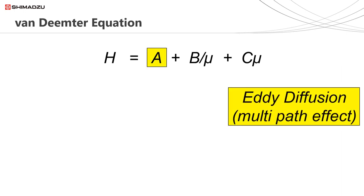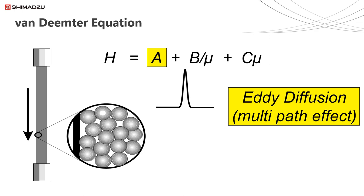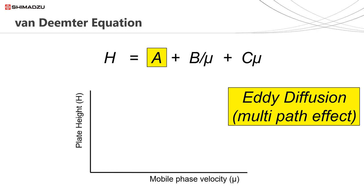The first term, the A term, is called eddy diffusion or the multi-path effect. If we consider a section of this column and a tight band of analyte at the top, band broadening due to eddy diffusion is caused when analytes have the opportunity to take multiple different paths throughout the column when travelling through the interstitial space between the particles. The smaller the particles, the tighter the particle size distribution, and the more uniform the particles are, the more homogeneous the interstitial space between the particles is. This results in less variation in path lengths, which decreases dispersion due to this multi-path effect. The contribution to plate height H from eddy diffusion is independent of flow rate, but is dependent on particle size and the uniformity of the column packed bed.